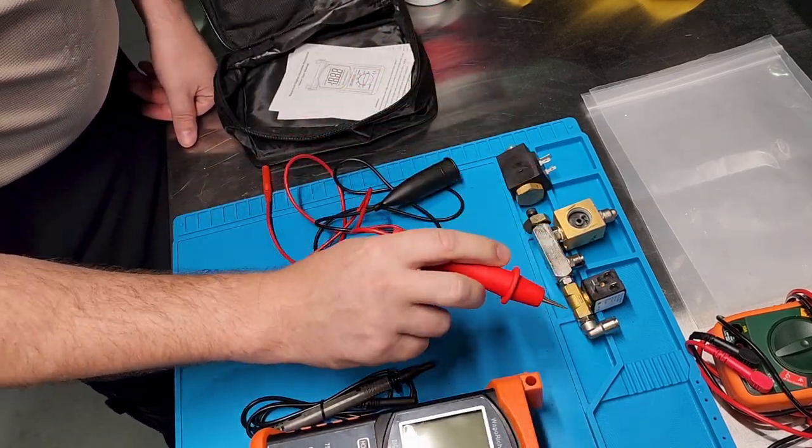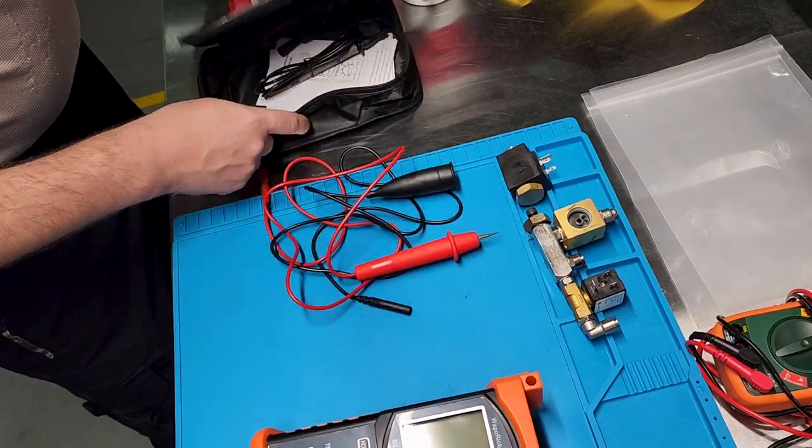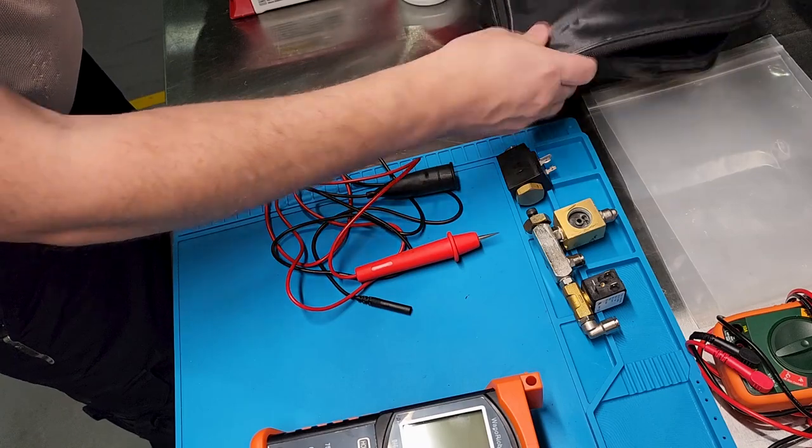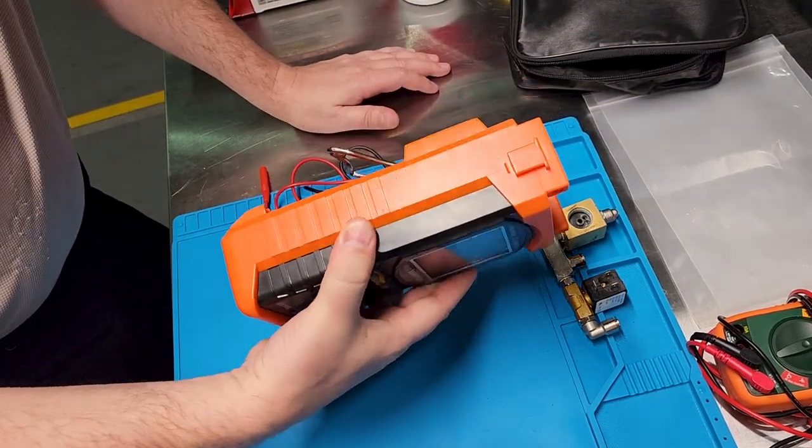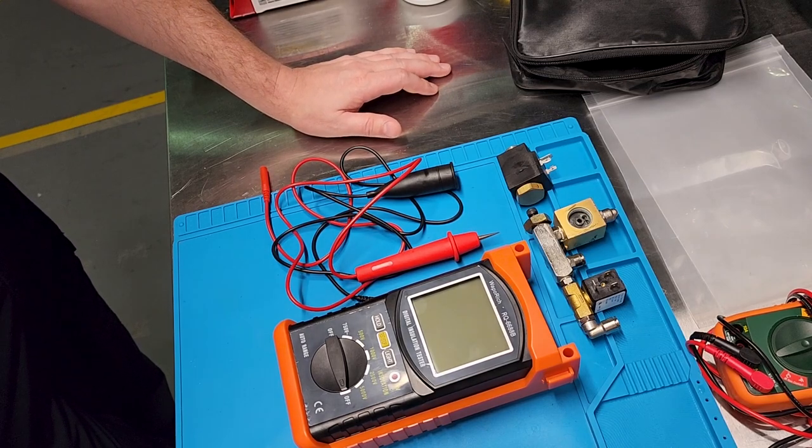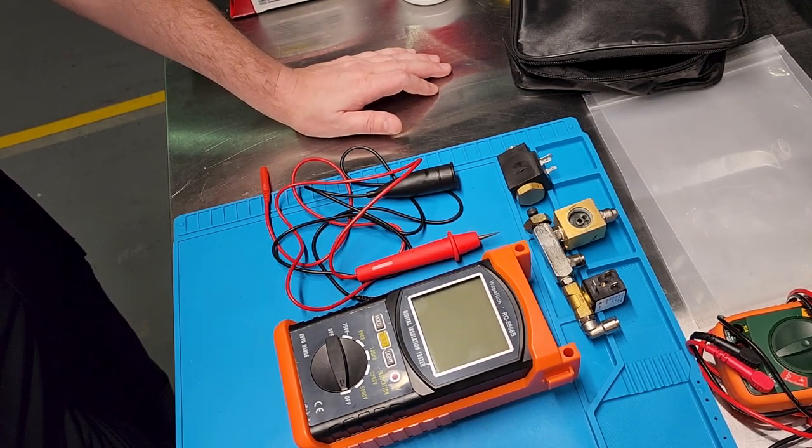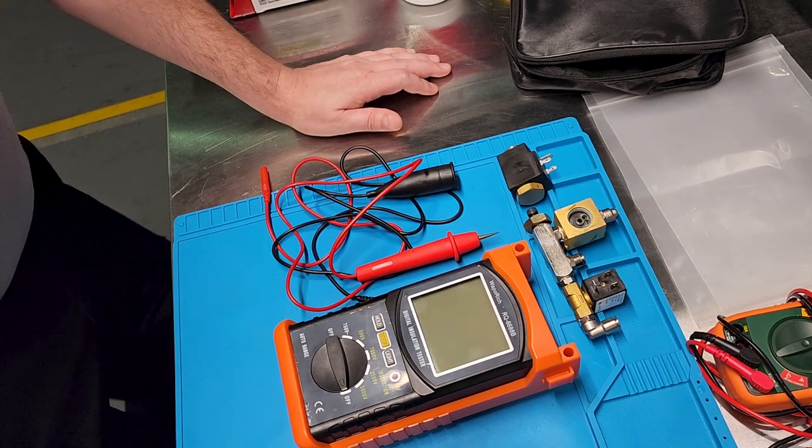So you don't necessarily need this one here. You can put the banana plug on there and use two alligator clips and then back away from the product. This one here is for doing multiple point probing, which is what we're going to do today. So I'll go ahead and put this probe back in the kit.